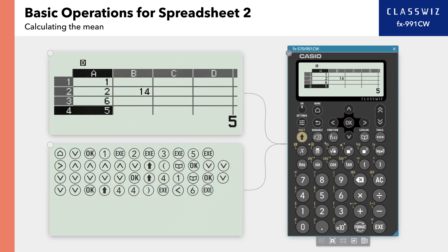Next, let's calculate the mean. Select the blank cell B3. Press Shift and opening parenthesis, then equals.